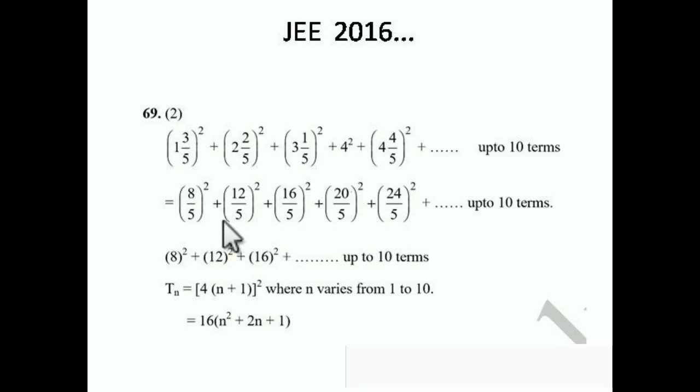In the numerator we can take 1/5² as common out, so we are left with 8² + 12² + 16² + ... up to 10 terms.